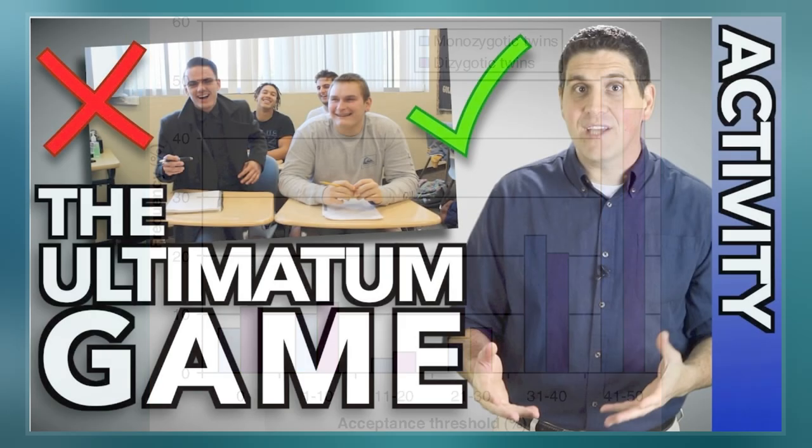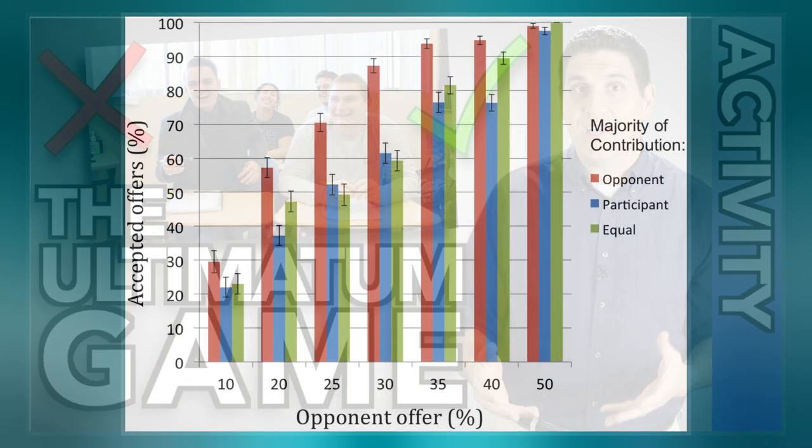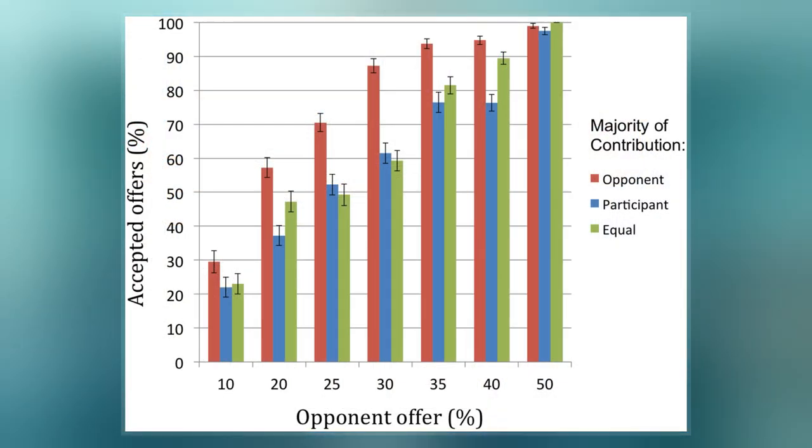There are two strategies available to the proposer: propose a fair split or propose an unfair split. For each of these two splits, the responder can choose to accept or reject, which means that there are four strategies available to the responder.